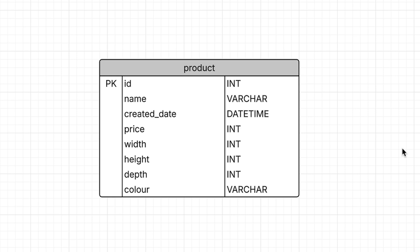So if this EAV design is so bad, surely there's a better way? Yes, there is. There are several alternatives to this design. The first option is to create a design that follows the traditional normalisation concepts. This means adding separate columns with the appropriate data types to the relevant tables, and lookup tables if there is a defined list of values. Here is an example based on a product database.